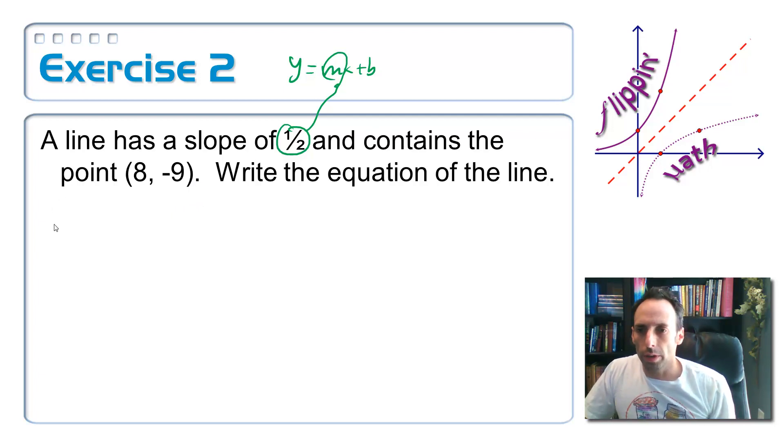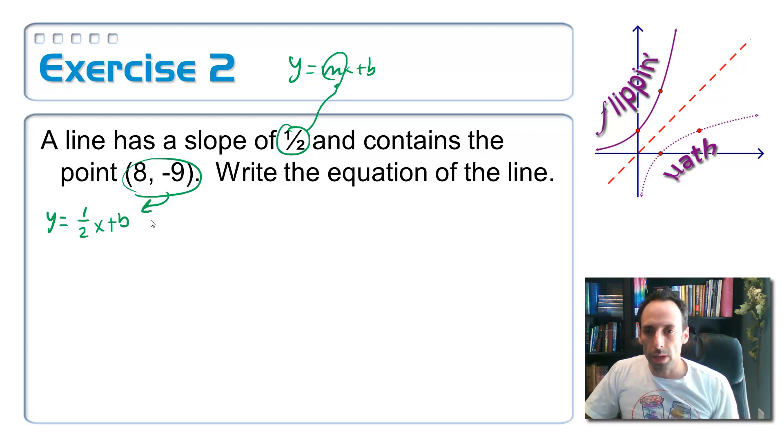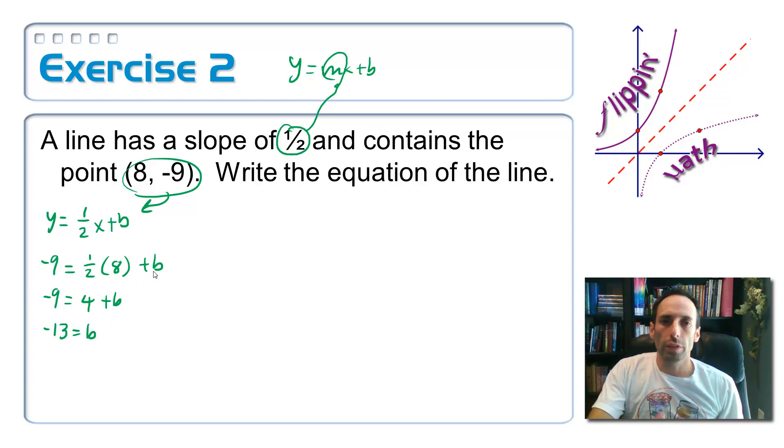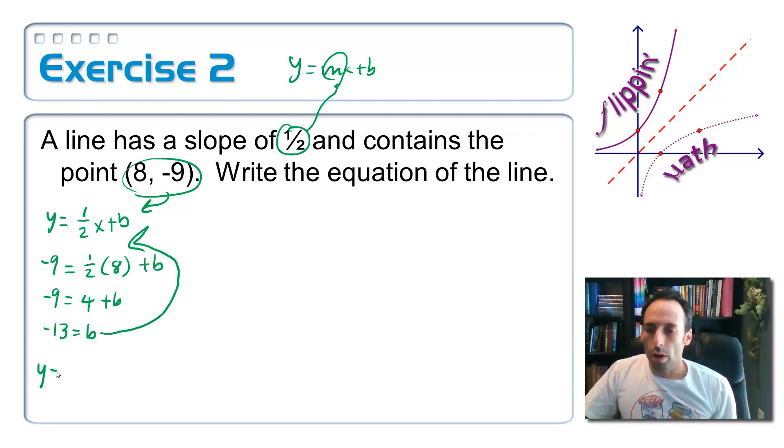So I'm going to write y is equal to one half x plus b. Now we're going to take that point, eight negative nine, and stick it into the equation and solve for b. So negative nine goes in for y equals a half times eight plus b. And simplify here. So a half of eight, four plus b. Subtract over the four and I have negative thirteen. Don't just leave your equation like this. You assemble it yourself. Put this b back into the equation there. Y equals one half x minus thirteen. There's the equation.